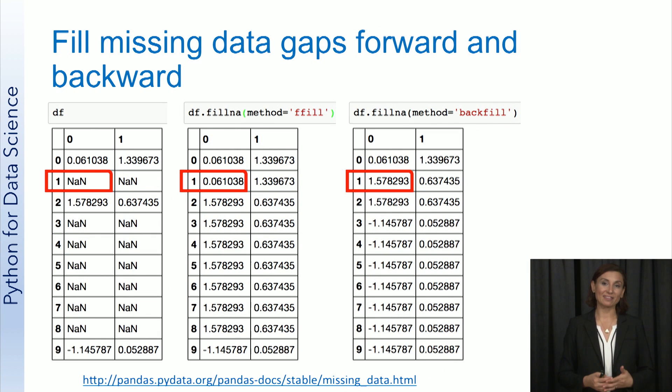FillNA method will replace missing values with the last known value, forward and backward, meaning going up and going down in the column.